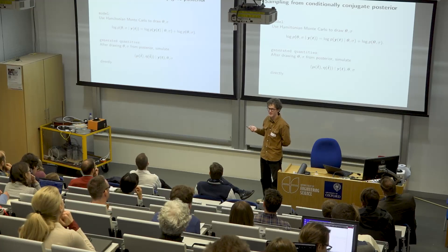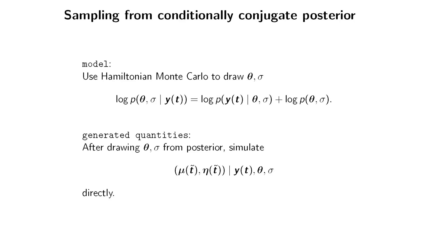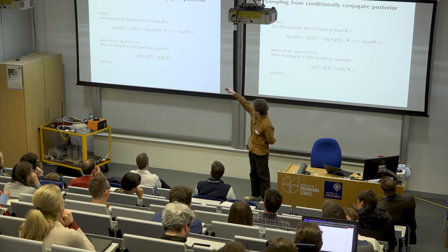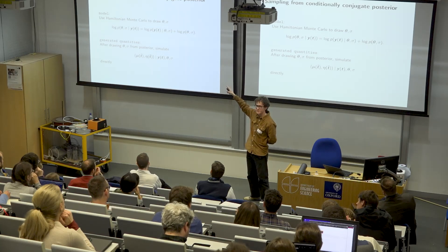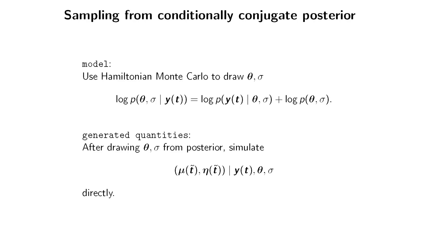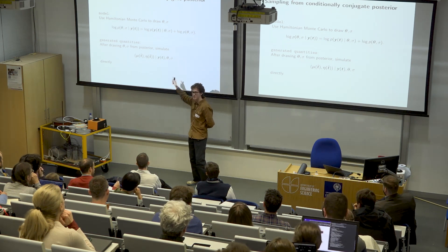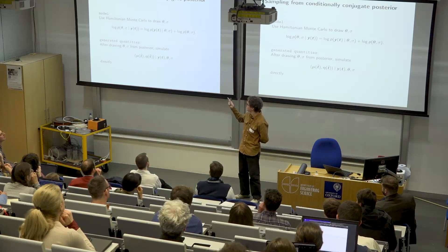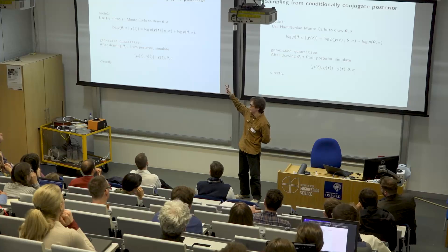How do we fit a Gaussian process model in Stan? The nice thing about using a normally distributed noise model is that it is conditionally conjugate. This means that in our Hamiltonian Monte Carlo step in the model block we only need to sample theta and sigma, where theta are the kernel parameters for the covariance structure and sigma is the noise standard deviation. The key for an efficient implementation is the likelihood of y given theta and sigma. Then in the generated quantities block we draw from the conditional posterior of mu and eta given the drawn kernel parameters theta and noise sigma — a multivariate normal we can evaluate as in standard GP regression.